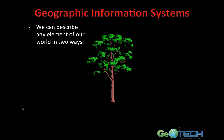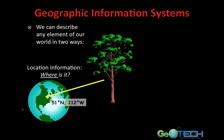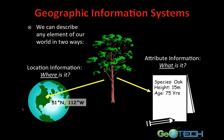With GIS, we can describe any element of our world in two ways. The first is simply location — where is it? In my example, I have an oak tree; we put it on the map and we know where it is. But with GIS we can also add attribute information — what is it? This oak tree has a height of 15 meters and an age of 75 years. We're no longer dealing with static maps — we can actually query something on the map and find out more information about it.